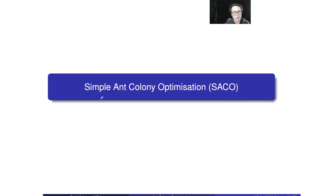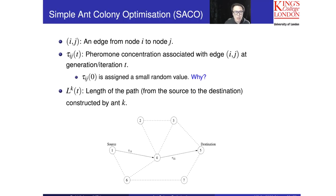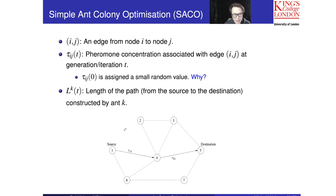In this section, I'm going to talk about the Simple Ant Colony Optimization, or in short, SACO. I'm going to give a brief introduction about what problem we are going to solve using the Simple Ant Colony Optimization. As I mentioned before, for the Ant Colony Optimization, we are going to find the shortest path in a graph.